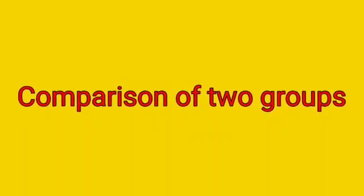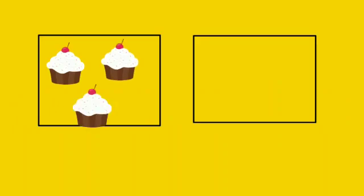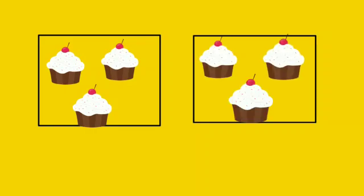Comparison of two groups. In the first group, there are three cupcakes. In the second group, there are three cupcakes. It is equal on both sides. Three cupcakes are there on both sides.